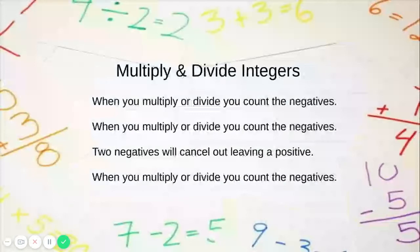When you multiply or divide you count the negatives. When you multiply or divide you count the negatives. Two negatives will cancel out leaving a positive. When you multiply or divide you count the negatives.